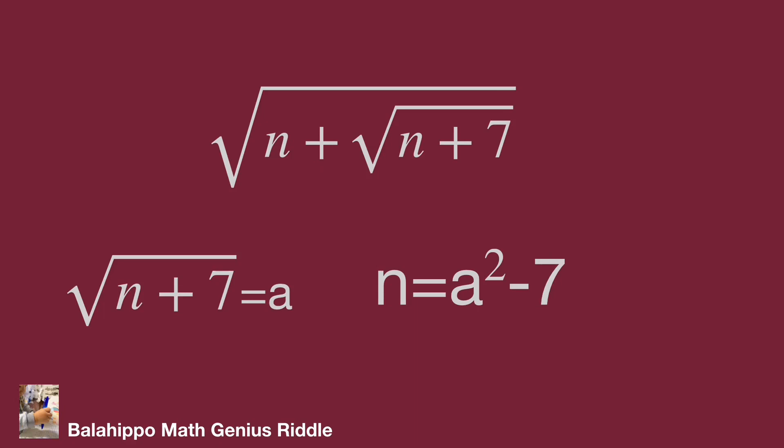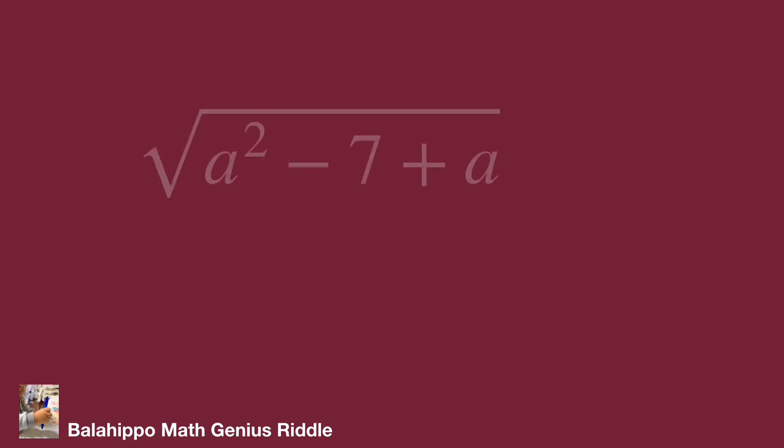After that, substitute n by a squared minus 7 and the square root of n plus 7 by a. Therefore we see this is square root of a squared minus 7 plus a, which is an integer. Let this square root of a squared minus 7 plus a equal m. Then m is a positive integer.